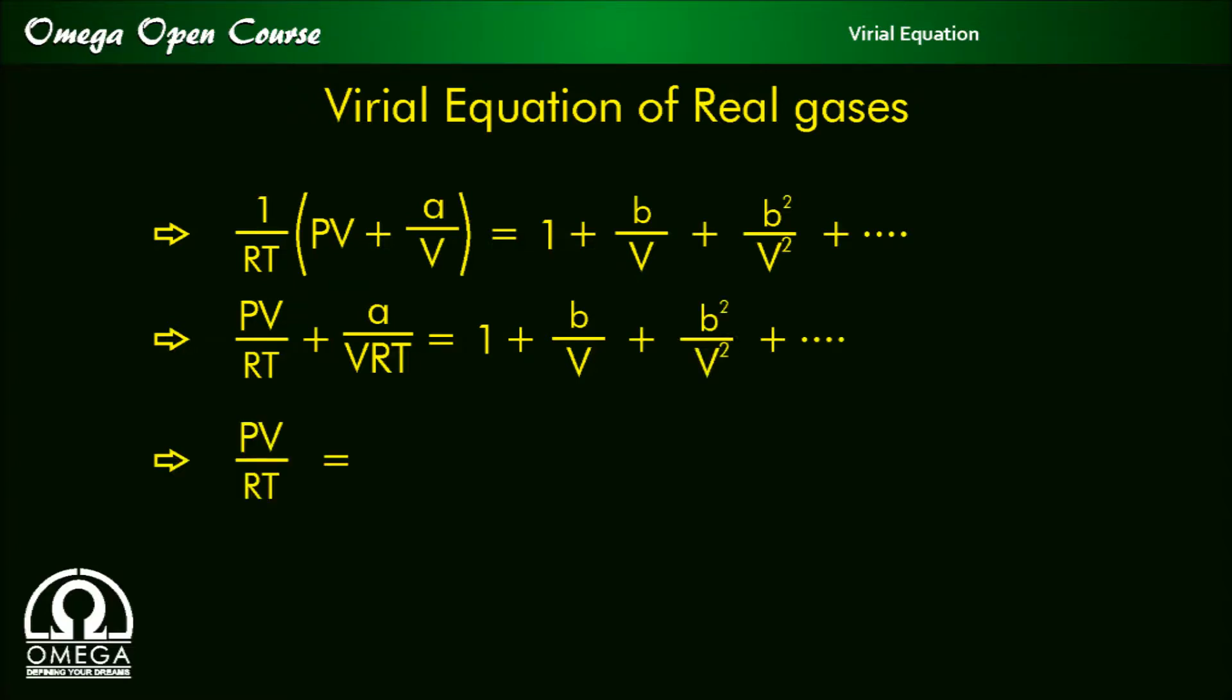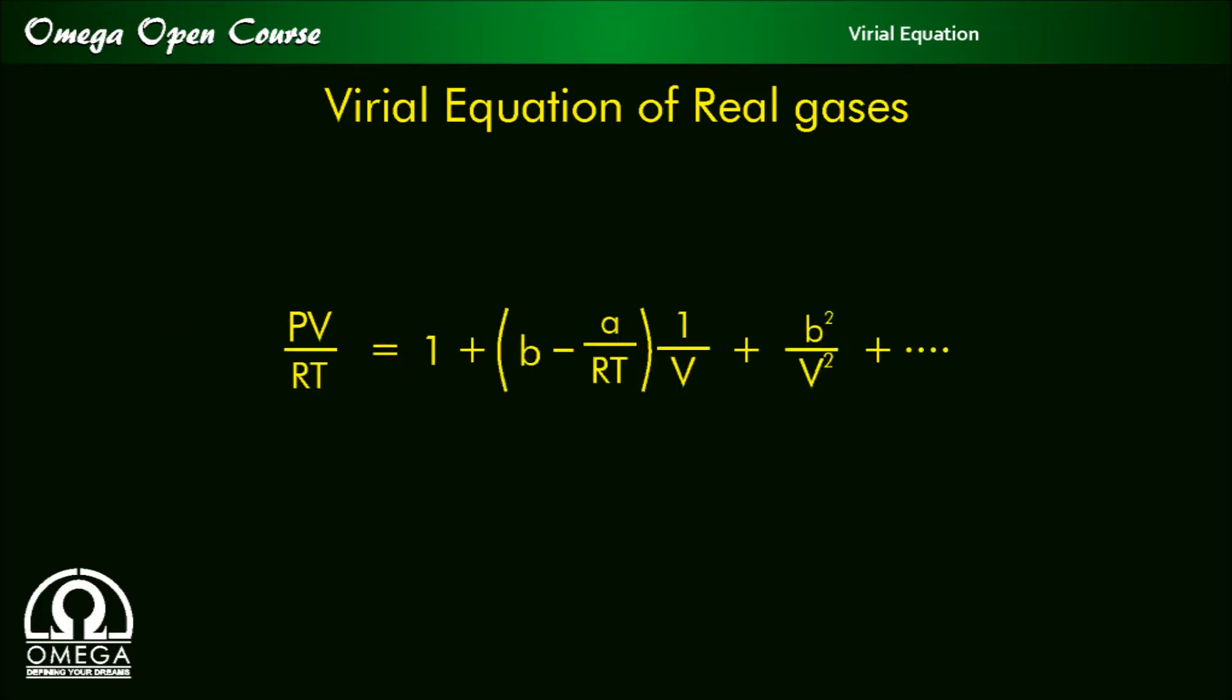Or PV by RT is equal to 1 plus b minus a by RT into 1 by V plus b square by V square up to infinity, and this is our virial equation of real gases.